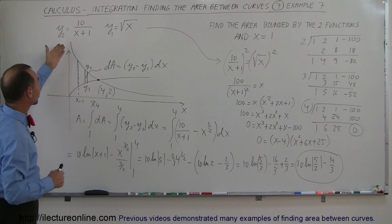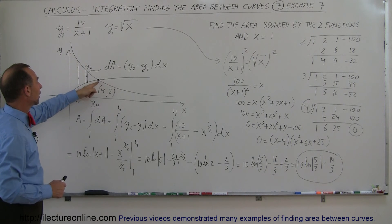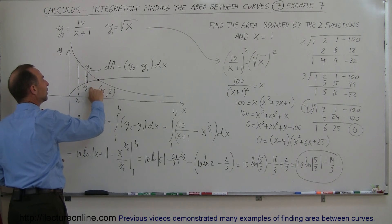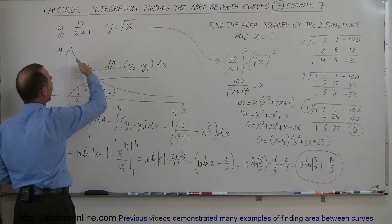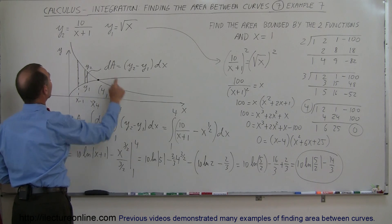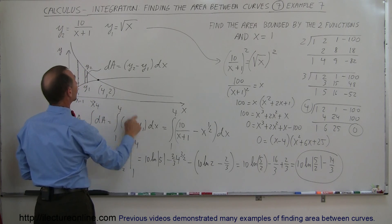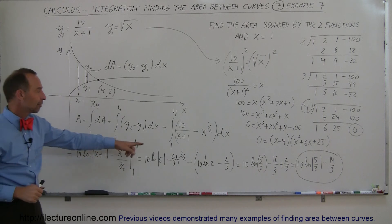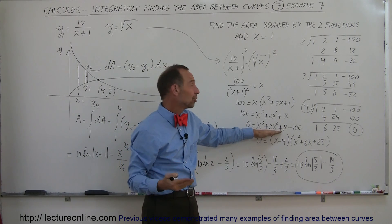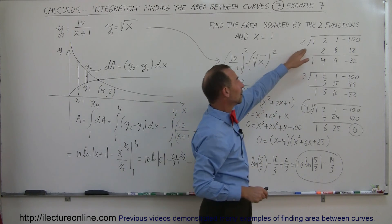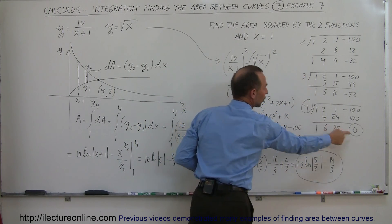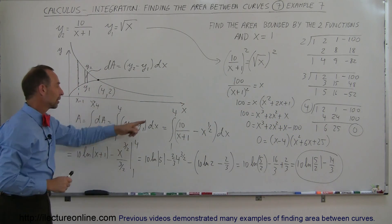To summarize our approach: we had two equations and needed to find the area between them, bounded between where they cross and the line x equals 1. We set up a vertical area element — height y2 minus y1, times width dx — then identified y2 as 10 over (x+1) and y1 as the square root of x. We solved the equations simultaneously, ended up with a cubic, and used synthetic division with guessing to find the root x equals 4. We then integrated and simplified.